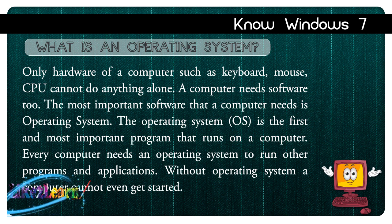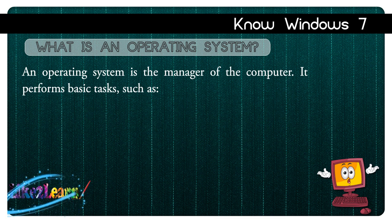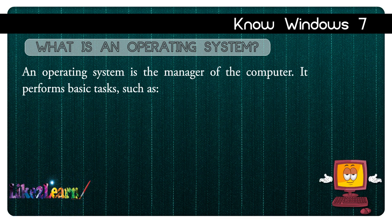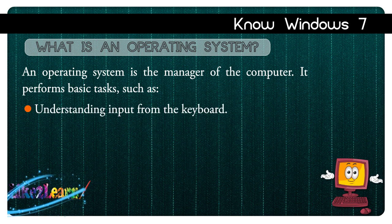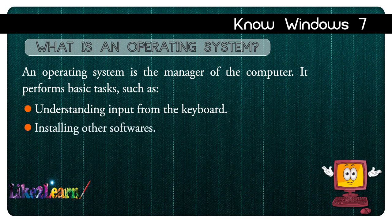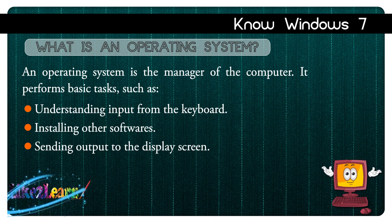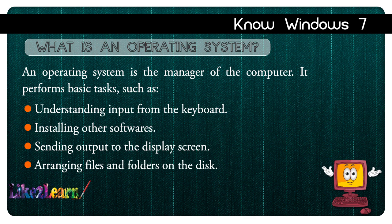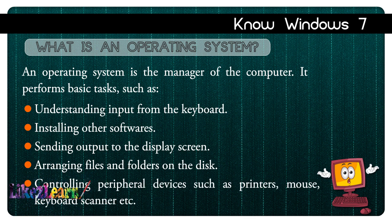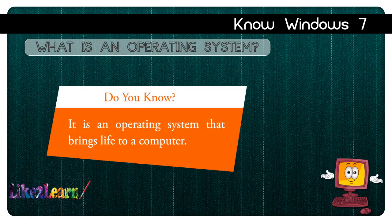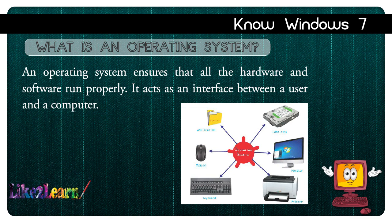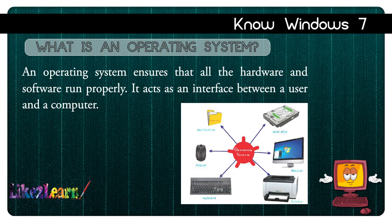Every computer needs an operating system to run other programs and applications. Without an operating system, a computer cannot even get started. An operating system is the manager of the computer. It performs basic tasks such as understanding input from the keyboard, installing other software, sending output to the display screen, arranging files and folders on the disc, and controlling peripheral devices such as printers, mouse, keyboard, and scanner. It is the operating system that brings life to a computer, ensures all hardware and software run properly, and acts as an interface between a user and a computer.